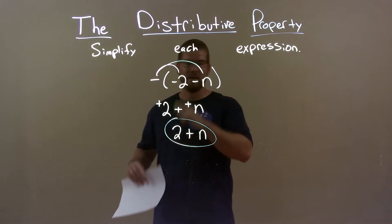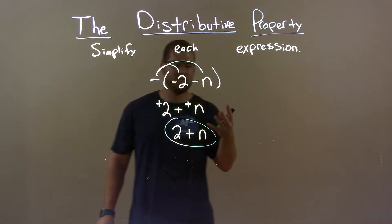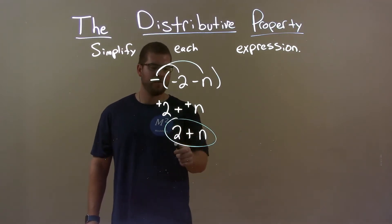I distributed the negative across, and after simplifying that, knowing that subtracting a negative is a positive, we're adding a positive. My final answer is just 2 plus n.